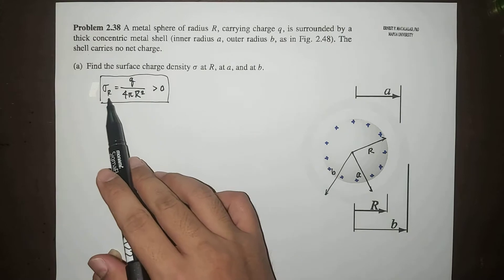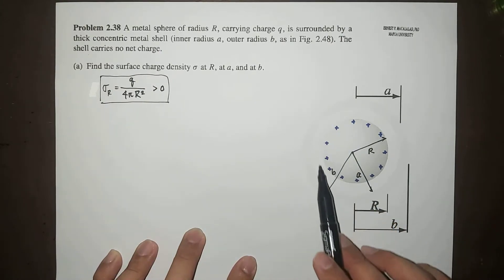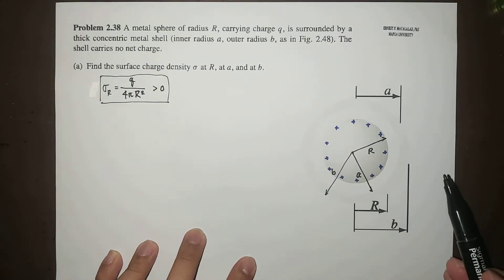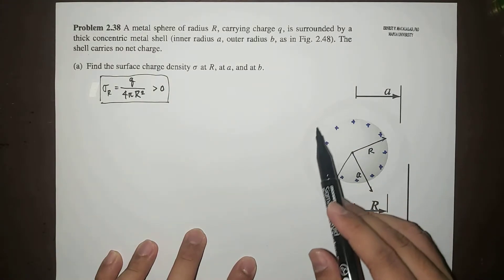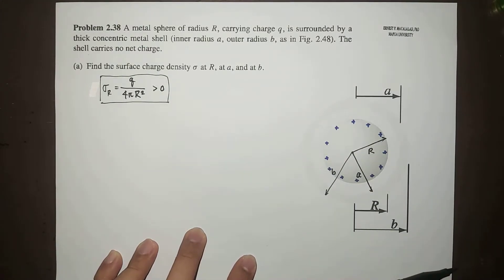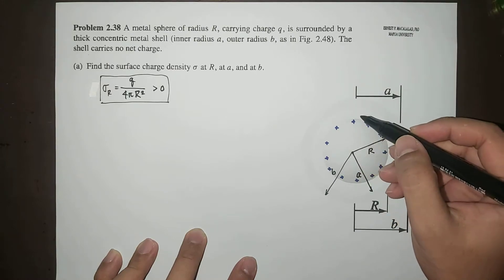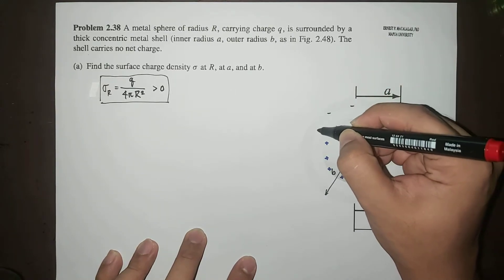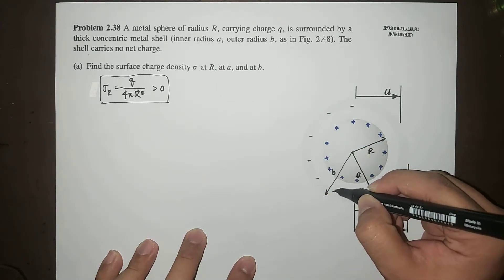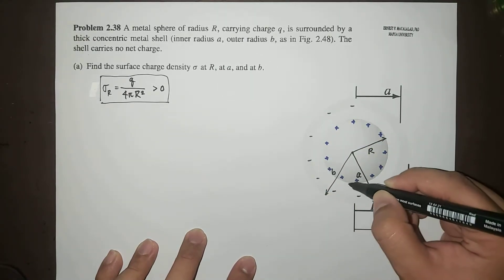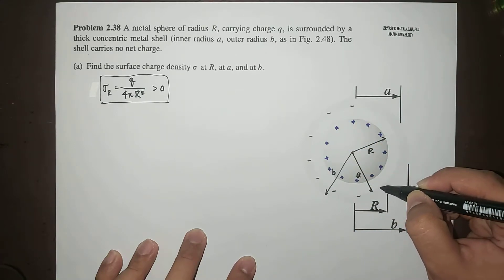Now, this sigma at the surface attracts the negative charges in this metal shell. This means that at the inner surface of this metal shell, negative charges are attracted. This is induced charge at the inner surface.